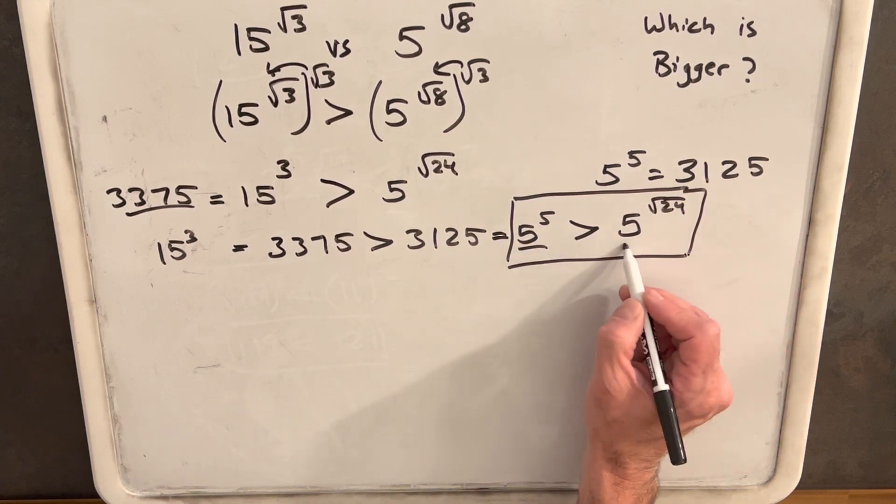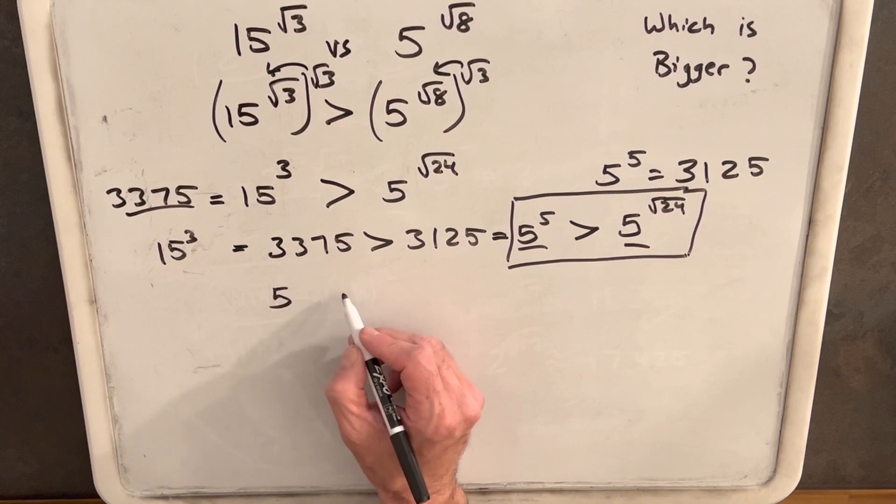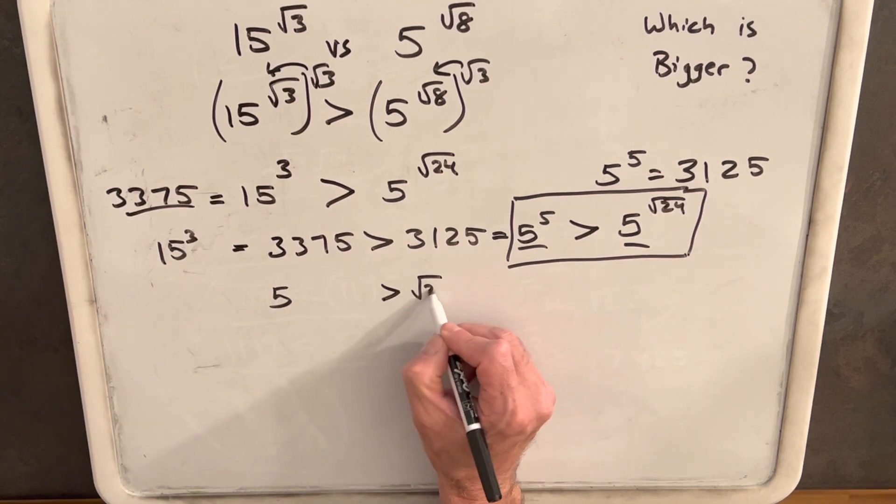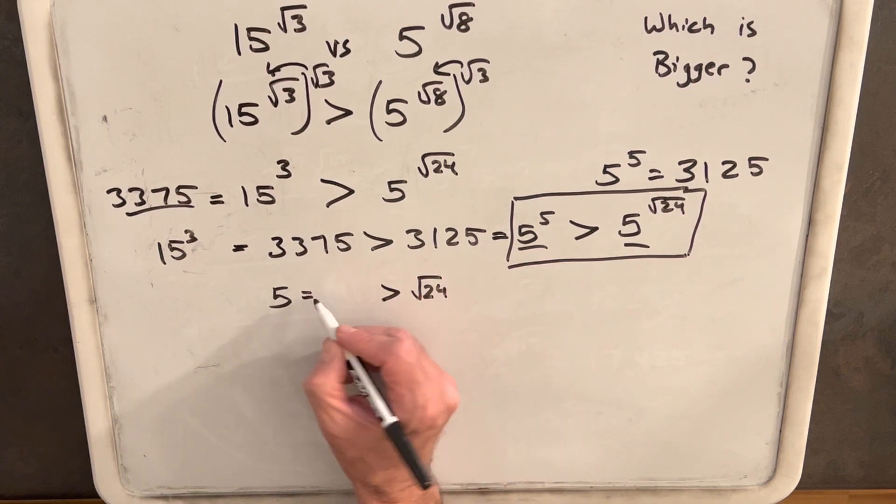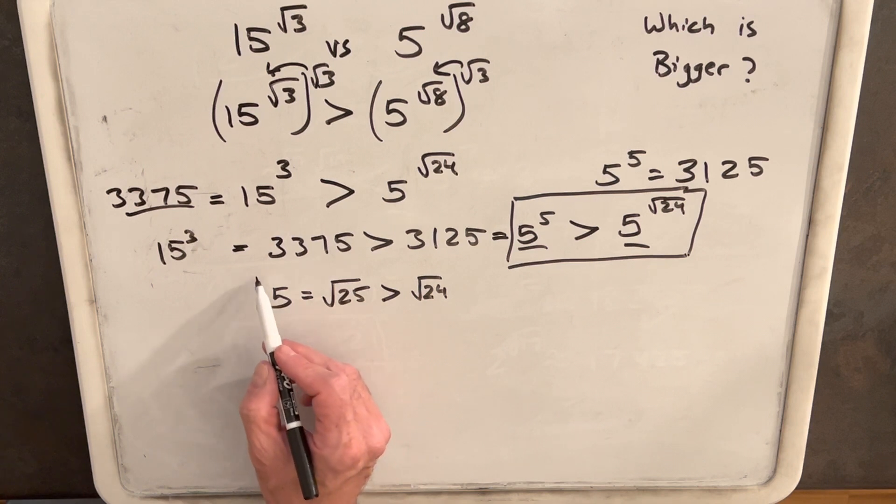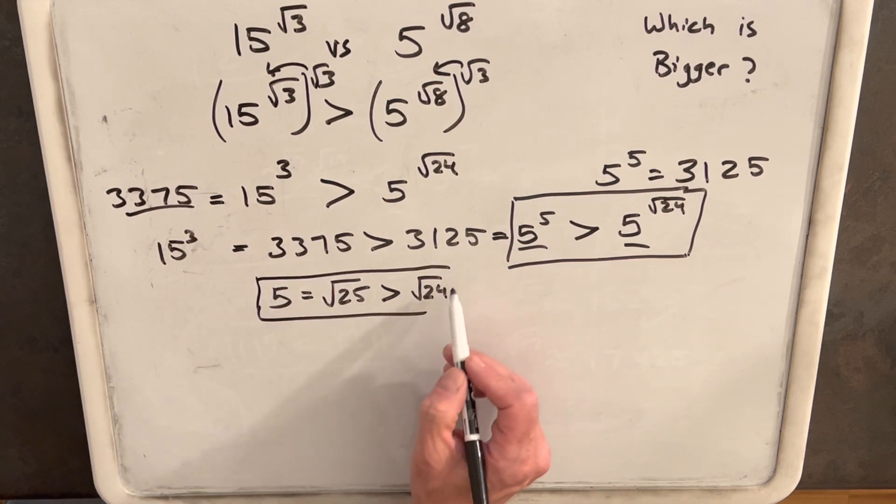But we have the same base so we're actually just comparing 5 to the square root of 24. We want 5 to be greater than the square root of 24. And notice that 5 is actually just the square root of 25. So this is clearly a true statement. The square root of 25 must be greater than the square root of 24.